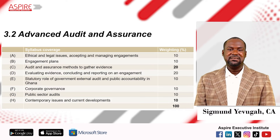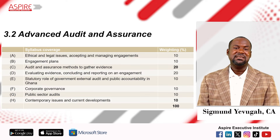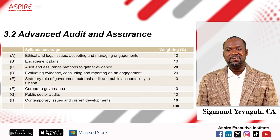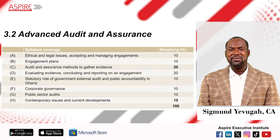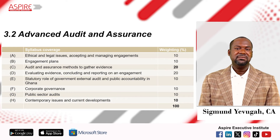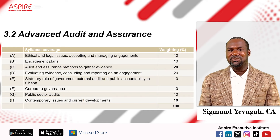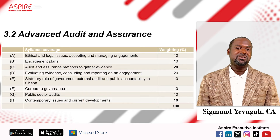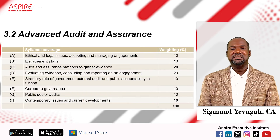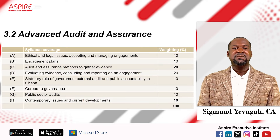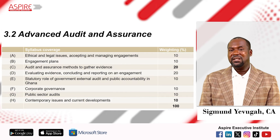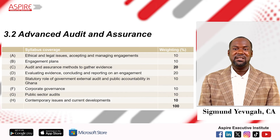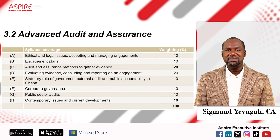So what has been the content of this subject — Paper 3.2, Advanced Audit and Assurance — in the new syllabus? The content has been broadly maintained with a few changes I will discuss shortly. The regular issues of ethics, legal issues, and accepting and managing engagements are weighted at 10 marks. Planning work and audit of historical financial statements is still weighted at 10 marks.